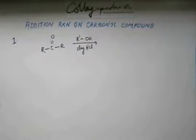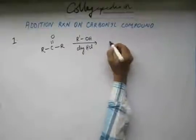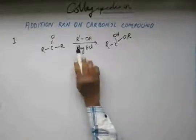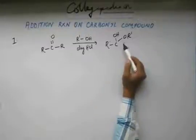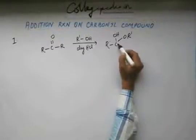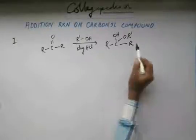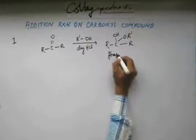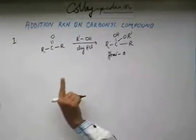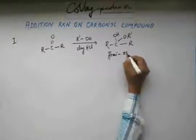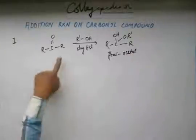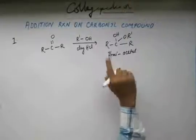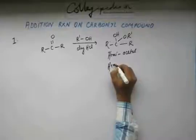If I am taking dry HCl and alcohol then what happens is this alcohol, this R'OH gets added on this C double bond O and gets attached to this carbon. Now this form when you have one alcoholic group added on the carbonyl group, this is called hemiacetyl if this is aldehyde and hemiketal if this is a ketone. In this case because we have taken ketone this will be called as hemiketal.